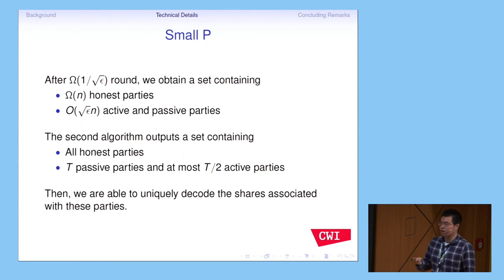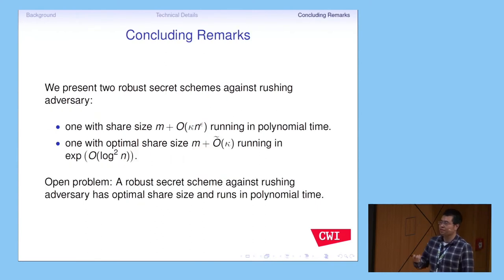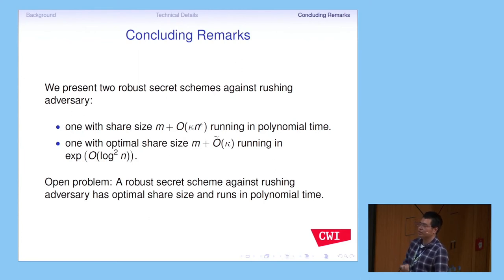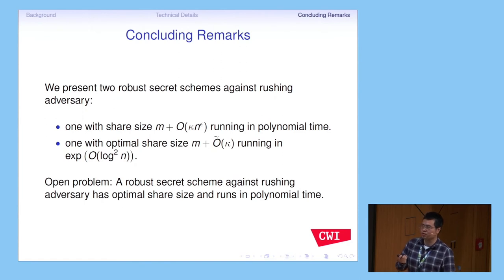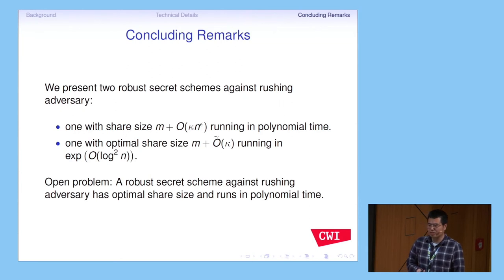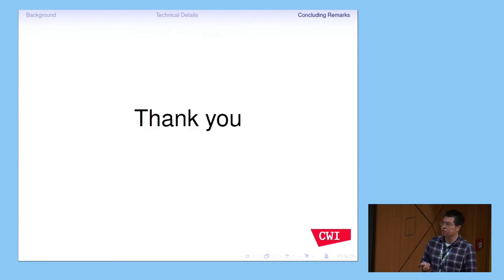To summarize: we present two robust secret sharing schemes against the Russian adversary. One scheme achieves suboptimal share size but runs in polynomial time. The other scheme achieves optimal share size but has super-polynomial running time because of the list size. The open problem is whether we can achieve both polynomial running time and optimal share size simultaneously. That's my talk. Thank you.